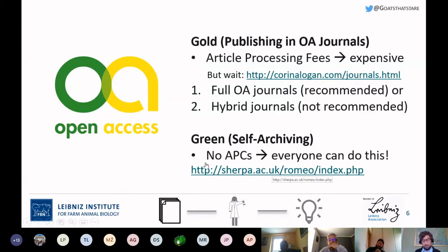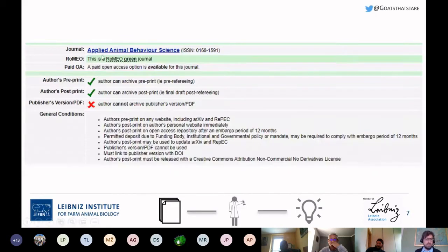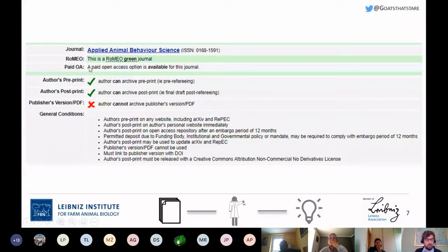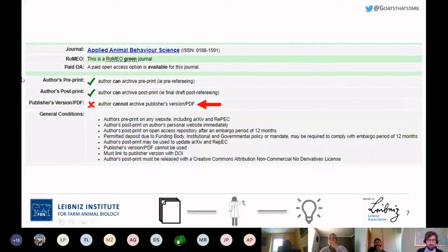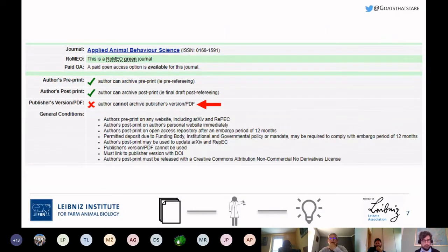There's a link to the Sherpa Romeo database, which gives a lot of information on how specific journals deal with green open access. Using Applied Animal Behavior Science as an example, you can see it's a Romeo green journal, and the paid open access option is also available, meaning it's a hybrid journal. Sherpa Romeo shows you how the journal allows or does not allow articles to be distributed. As an author, you cannot archive the publisher's formatted PDF version of the article.